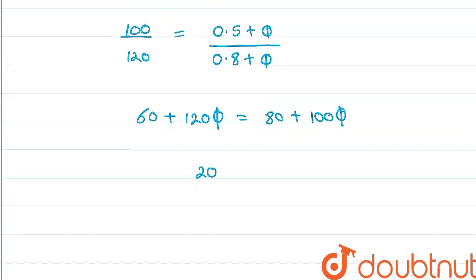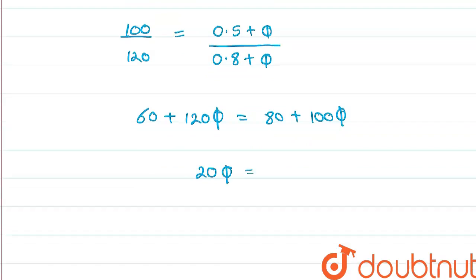From here, we will be getting 25 phi equal to 20. And phi that is work function became 1 electron volt. So this is the work function.